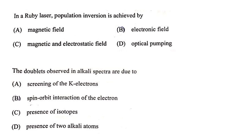In a ruby laser, population inversion is achieved by optical pumping. The doublets observed in alkali spectra are due to spin-orbit interaction of the electron.